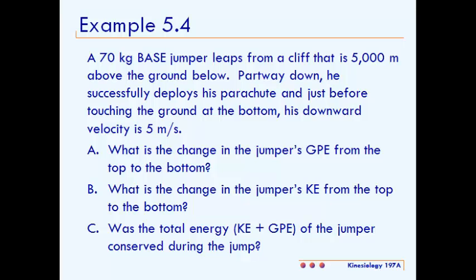Example 5.4 says a 70-kilogram base jumper leaps from a cliff that is 5,000 meters above the ground below. Partway down, he successfully deploys his parachute, and just before touching the ground at the bottom, his downward velocity is 5 meters per second.